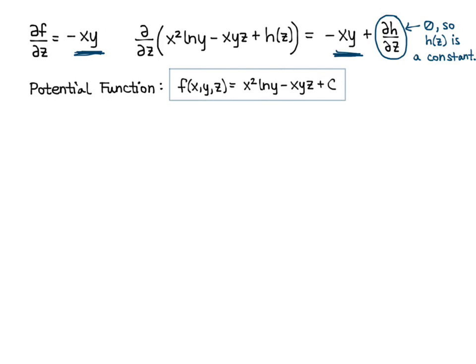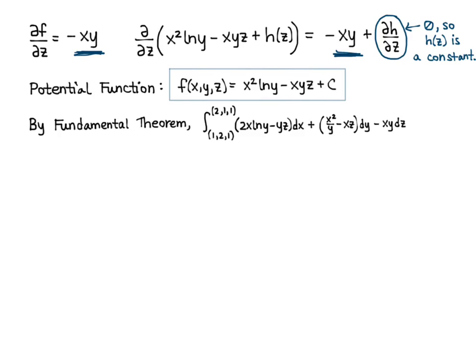You can double check this by taking the partial derivatives and making sure that they match up with your initial M, N, and P. By the fundamental theorem for line integrals, the line integral from (1, 2, 1) to (2, 1, 1) of 2x natural log of y minus yz dx plus x squared over y minus xz dy minus xy dz equals the potential function f evaluated at (2, 1, 1) minus the potential function evaluated at (1, 2, 1). Plug in the upper bound, plug in the lower bound, and subtract.